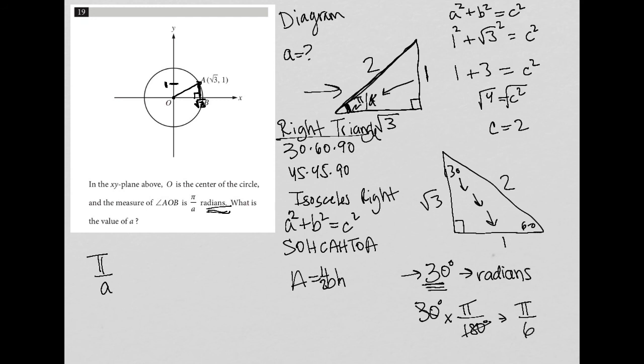right, so if this is pi over 6, therefore, A is equal to 6. And that's your final answer.